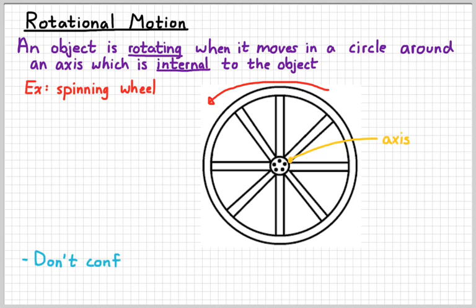Don't confuse this with revolutions, which we've already studied. In a revolution, the axis is external to the object. So for example, the moon revolves around the earth. The earth is not inside the moon. Therefore, that is a revolution, not a rotation.